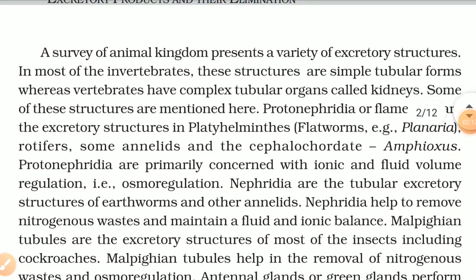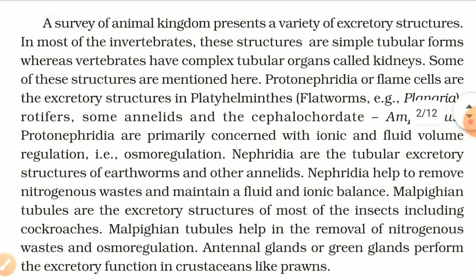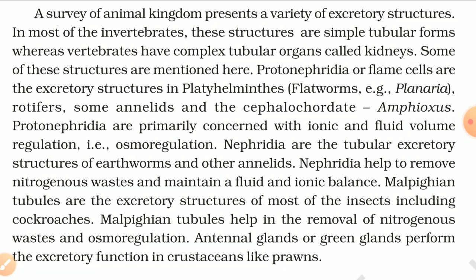A survey of the animal kingdom presents a variety of excretory structures. In most of the invertebrates, these structures are simple tubular forms, whereas vertebrates have complex tubular organs called kidneys. Protonephridia or flame cells are the excretory structures in platyhelminthes, flatworms (e.g., planaria), rotifers, some annelids, and the cephalochordate amphioxus. Protonephridia are primarily concerned with ionic and fluid volume regulation, i.e., osmoregulation. Nephridia are the tubular excretory structures of earthworm and other annelids, helping to remove nitrogenous waste and maintain fluid and ionic balance. Malpighian tubules are the excretory structures of most insects including cockroaches, helping in removal of nitrogenous waste and osmoregulation. Antennal glands or green glands perform the excretory function in crustaceans like prawns.